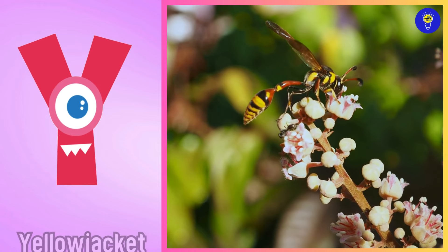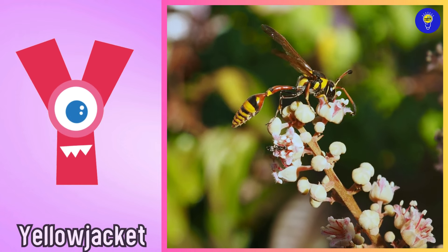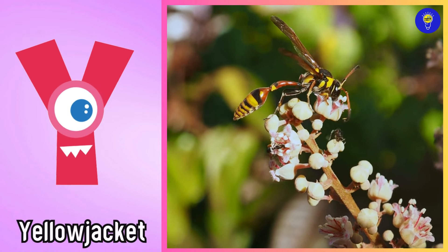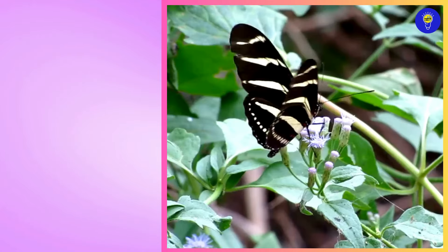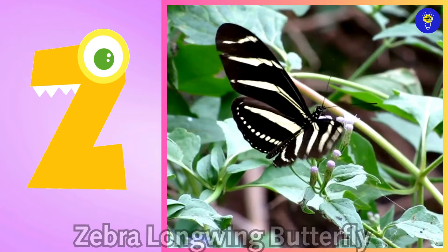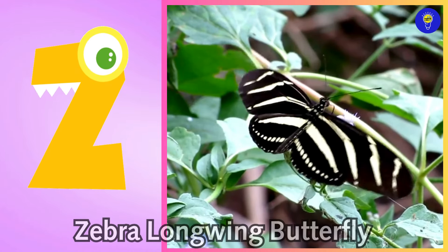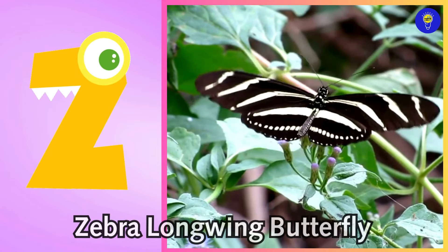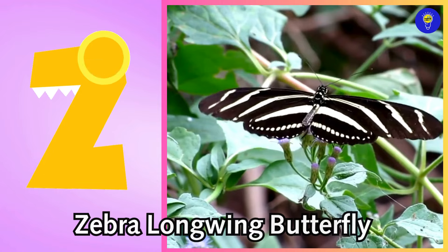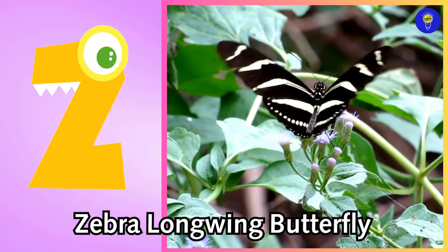Y is for yellow jacket. y, yellow jacket. Z is for zebra longwing butterfly. z, zebra longwing butterfly.